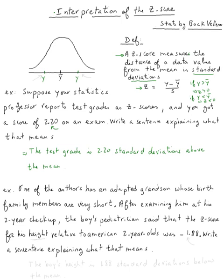So I think that would be the next example. One of the authors has an adopted grandson whose birth family members are very short. After examining him at his two-year checkup, the boy's pediatrician said that the z-score for his height relative to American two-year-olds was negative one point eighty eight. Write a sentence explaining what that means.